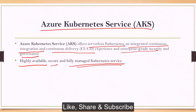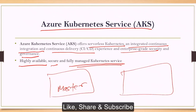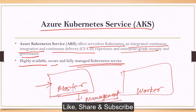What AKS actually does is manage or orchestrate containers. In a Kubernetes cluster, we have two kinds of nodes: one is the master node and the other is the worker node. The master node is used for management purposes and has multiple components inside it — the etcd database, the engine, the controller — all the management components reside inside the master node. Inside worker nodes, we have the pods.